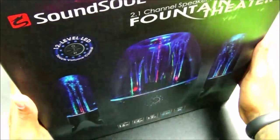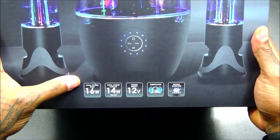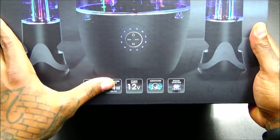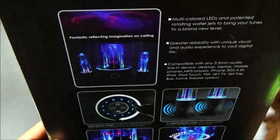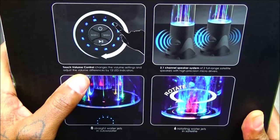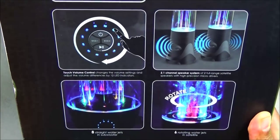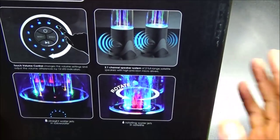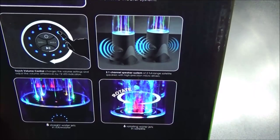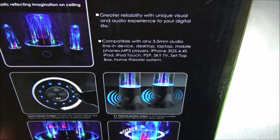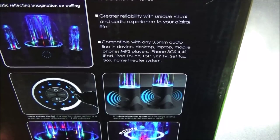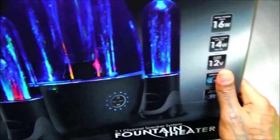You got a creative design, lightweight and compact, a great decoration for your desk. So 250 bucks for this, let's check it out. Now big giant box, can't even get it all the way into focus. Let's see if there's anything we need to talk about on the box. Total power 16 watts, 12 volt supply, subwoofer rotating dancing effect. Fantastic reflecting images on ceiling, so it'll reflect off the ceiling too. You got touch volume control, changes the volume settings and adjusts the volume differences by 12 LED indicators. Eight straight water jets in the subwoofer, rotating jets in the satellite.